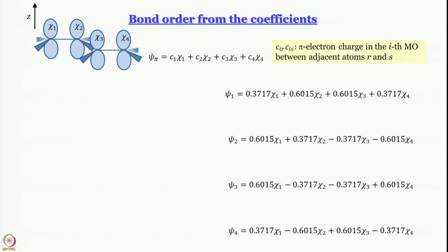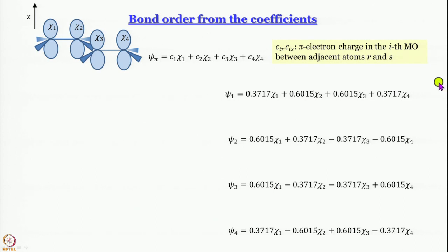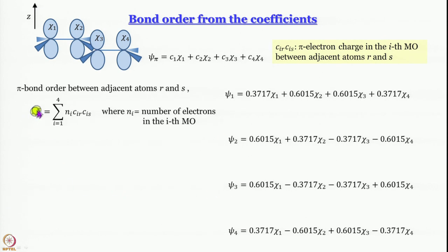The second important quantity is bond order. The product Cir × Cis gives the pi electron charge in the ith MO between adjacent atoms r and s. The pi bond order between adjacent atoms r and s is: Prs_pi = Σi ni × Cir × Cis, summing over all MOs, where ni is the number of electrons in the ith MO.